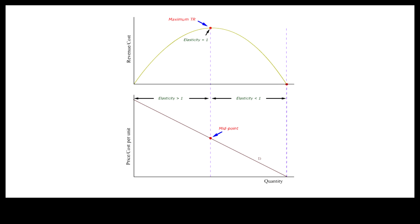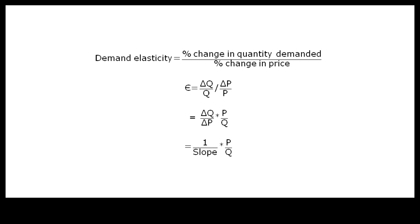A constant slope demand curve does not mean constant demand elasticity along the whole length of the demand curve. To the left of the midpoint, demand is elastic. At the midpoint, demand is unit elastic. To the right of the midpoint, demand is inelastic. As this equation shows, demand elasticity at any given point must take into account both the slope of the demand curve as well as the relative position of price charged and quantity demanded.